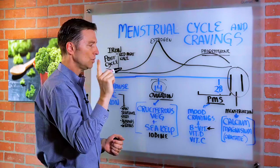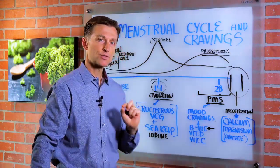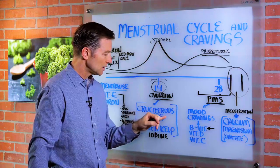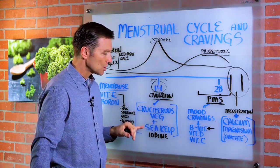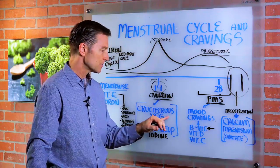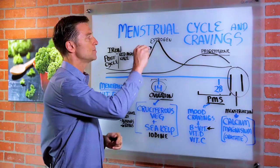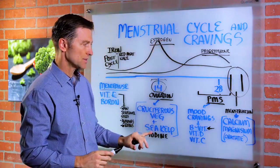Now, if you are craving during ovulation, that means there's a problem with estrogen. So you would need to consume more cruciferous vegetables and or seek help because iodine and cruciferous vegetables really help to balance estrogen. So that's what you do during this phase right here.